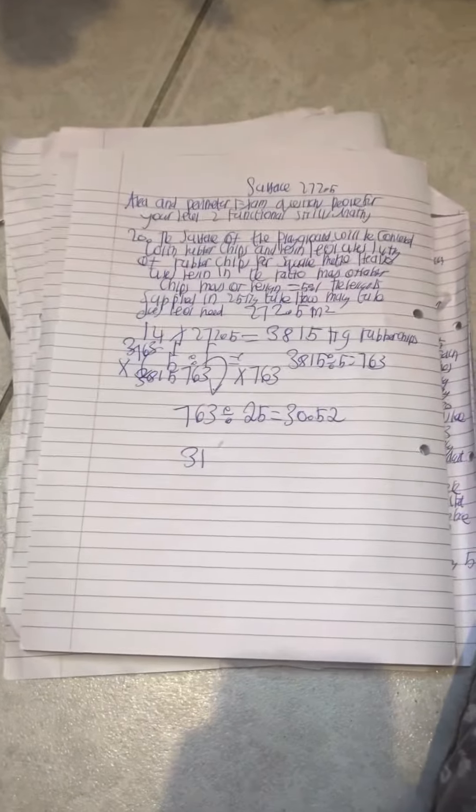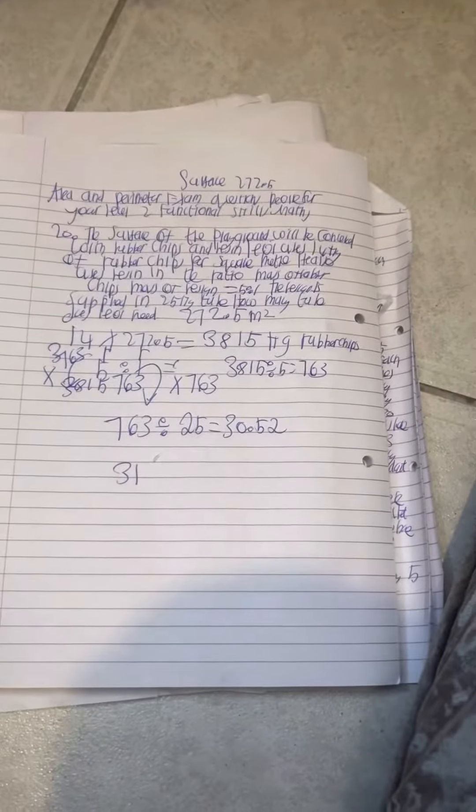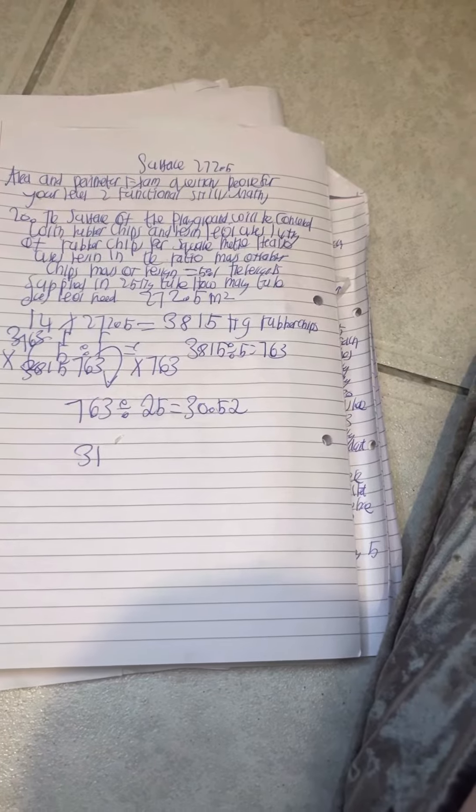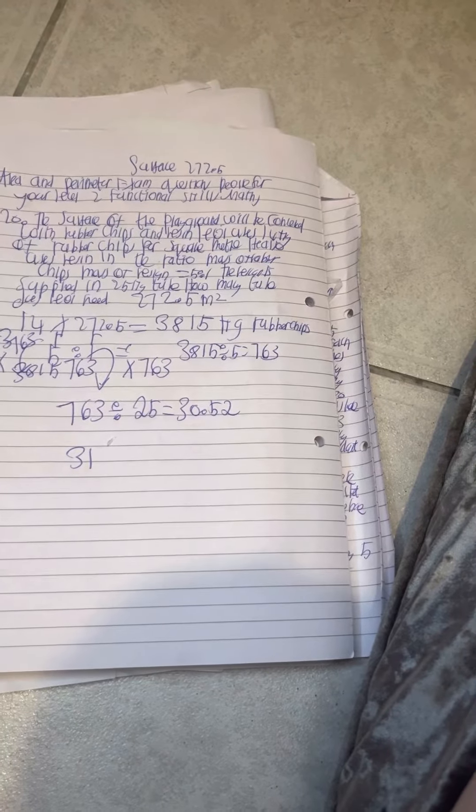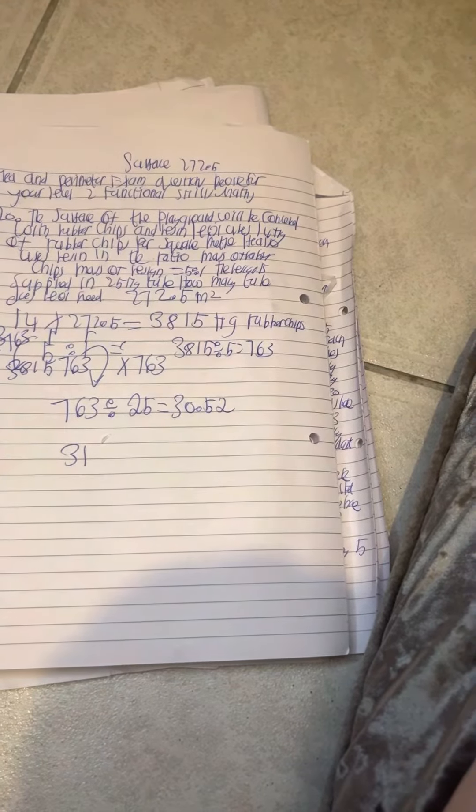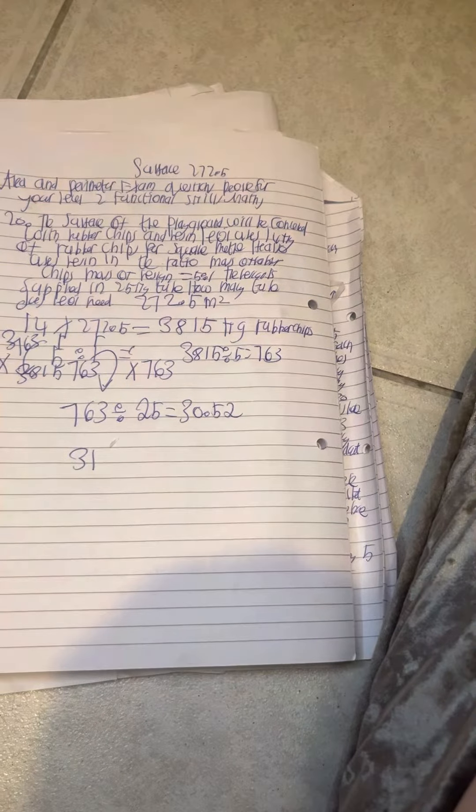Exam questions advice for your Level 2 Formative Skills Maths exam. The surface of the playground will be covered with rubber chips and resin. Lev uses 14kg of rubber chips per square meter.